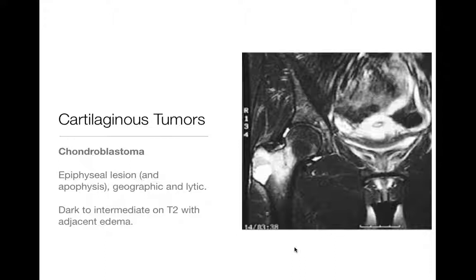This case also shows a fracture line from an insufficiency fracture through the lesion. This was a chondroblastoma in the greater trochanter, which is an apophysis — so an epiphyseal equivalent. But you can see them in any epiphysis or epiphyseal equivalent.